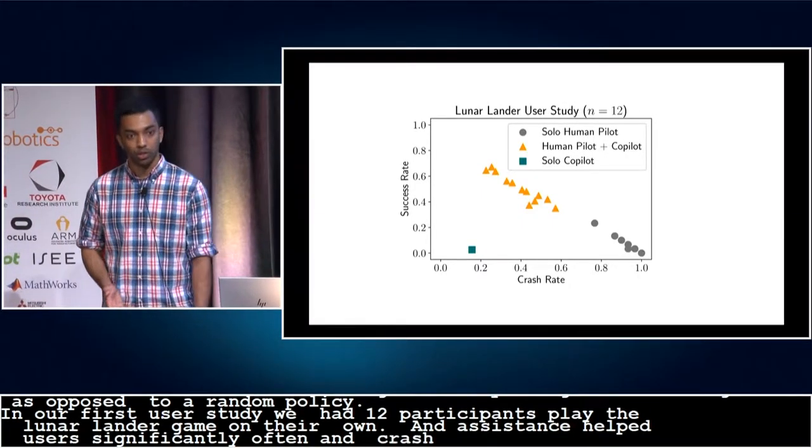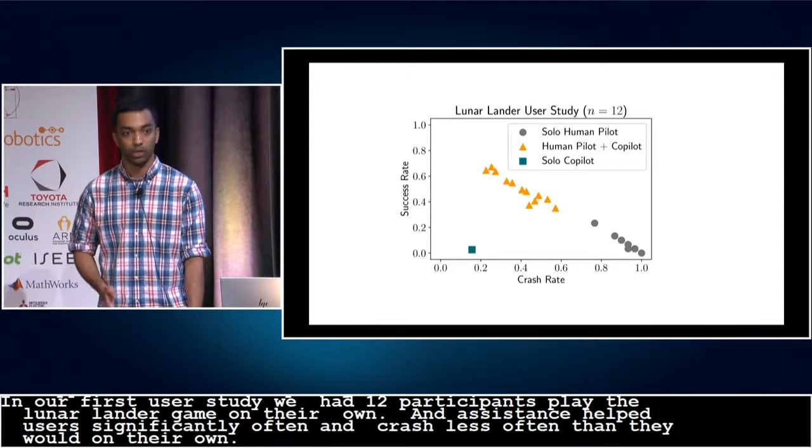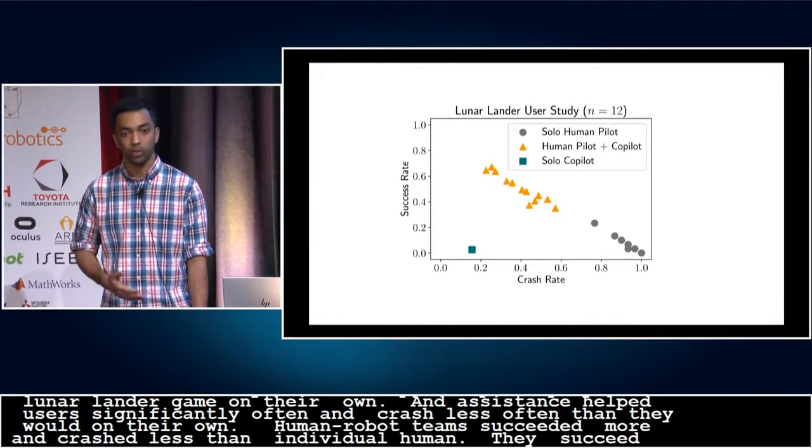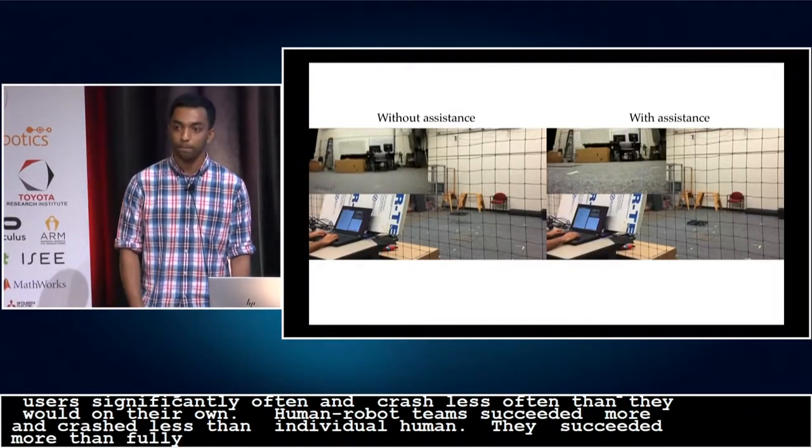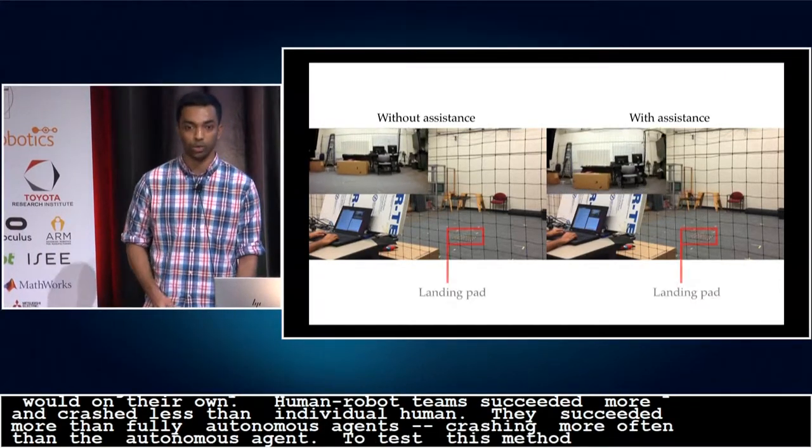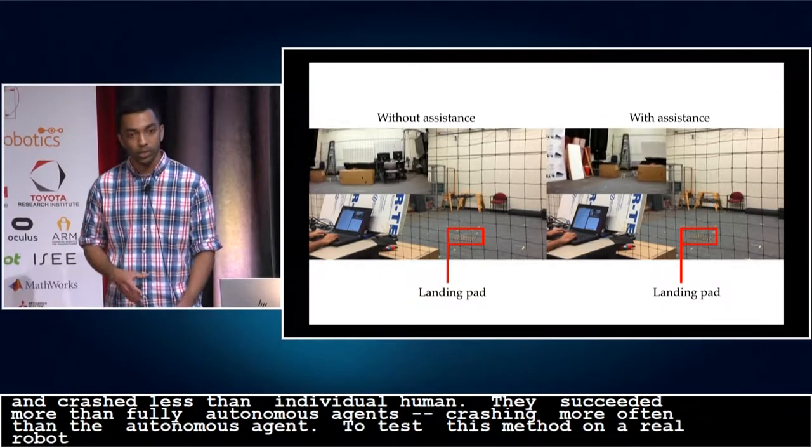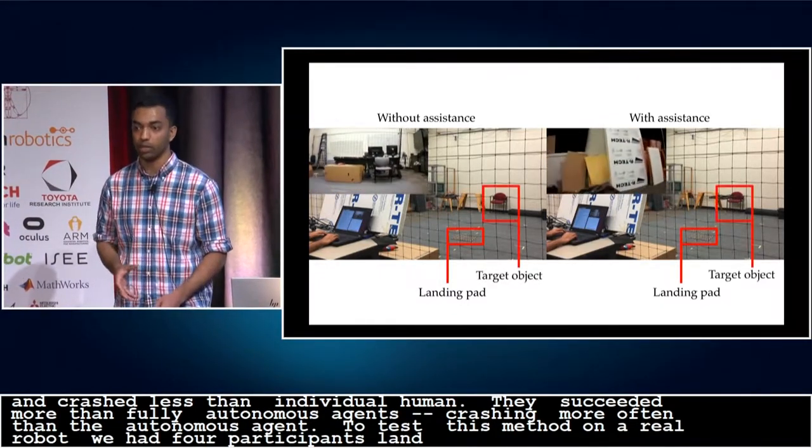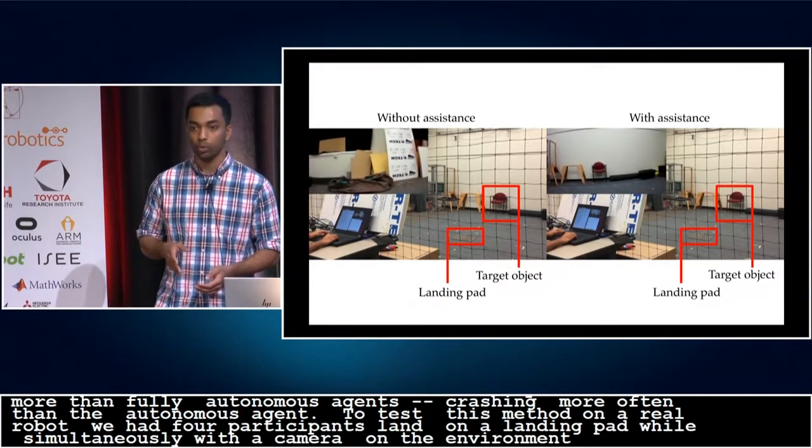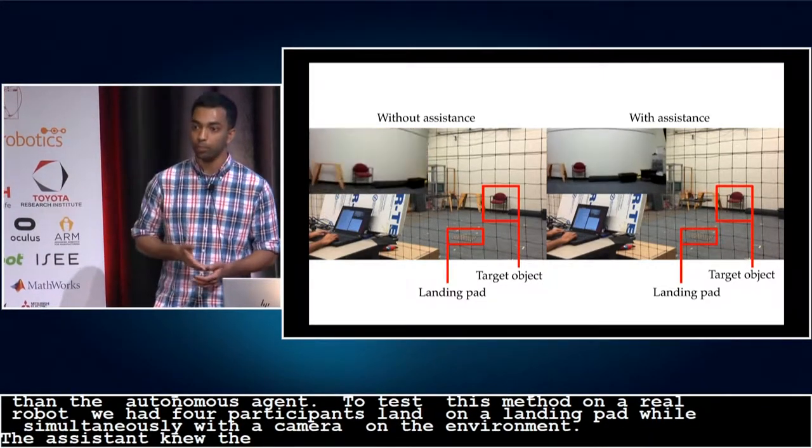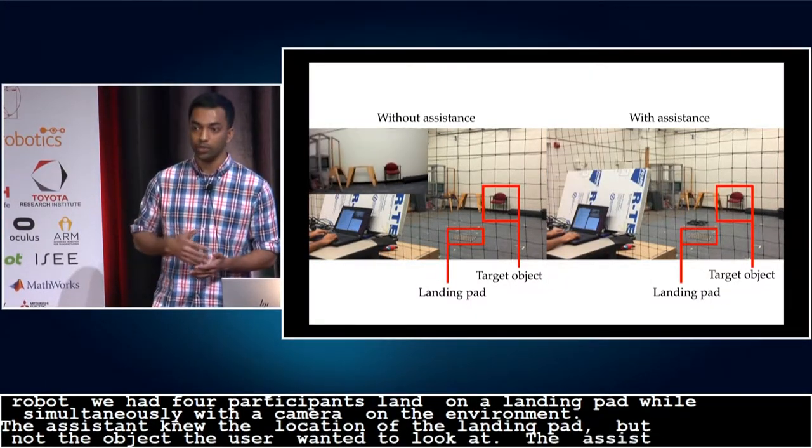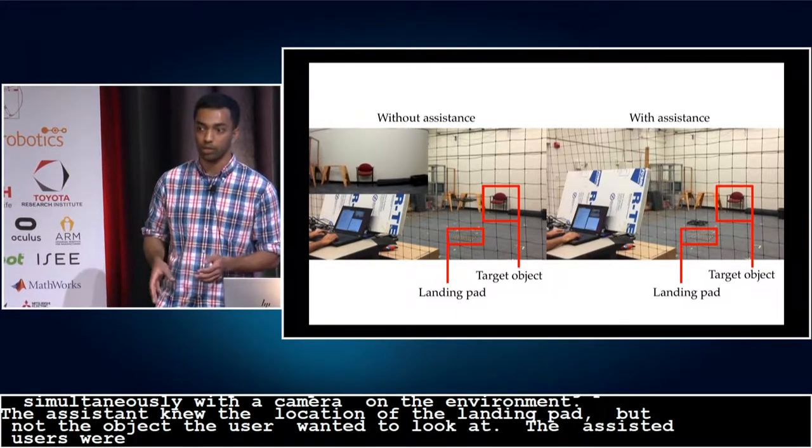So human-robot teams succeeded more and crashed less than individual humans. They also succeeded more than fully-autonomous agents, although that did come at the cost of crashing more often than the autonomous agent. To test our method on a real robot, we had four participants attempt to land a quadrotor on a small landing pad while simultaneously orienting an onboard camera to point at a target object in the environment. The assistive agent knew the location of the landing pad, but didn't know which object the user wanted to look at. We found that assisted users were able to successfully orient and land, while unassisted users were able to orient correctly, but rarely landed on the pad.